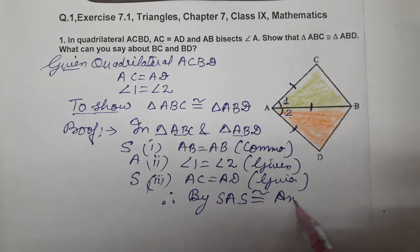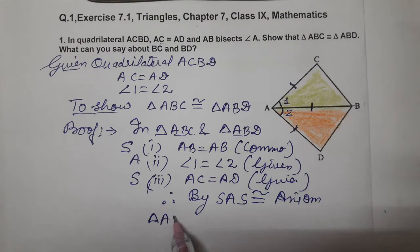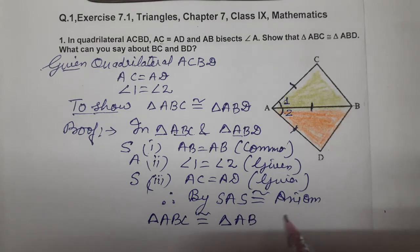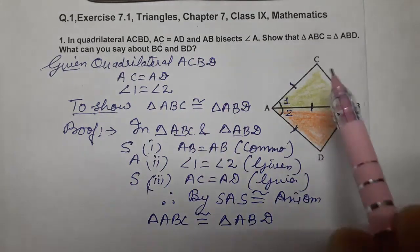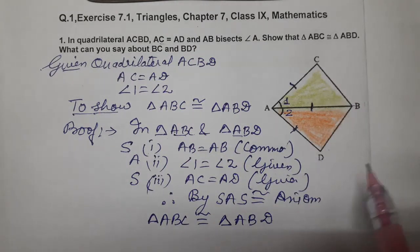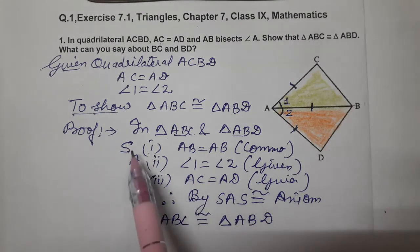By this axiom, triangle ABC is congruent to triangle ABD. Now what can you say about BC and BD? Once triangles are congruent, all six parts are congruent.